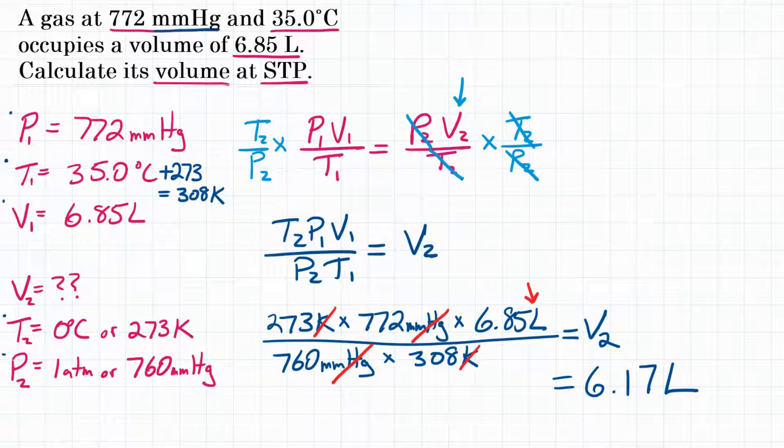There you have it. A gas at 772 millimeters of mercury and 35 degrees Celsius occupies 6.85 liters. Its volume at standard temperature and pressure would be 6.17 liters.